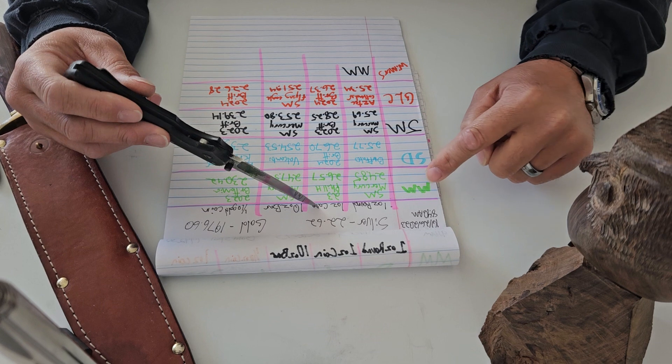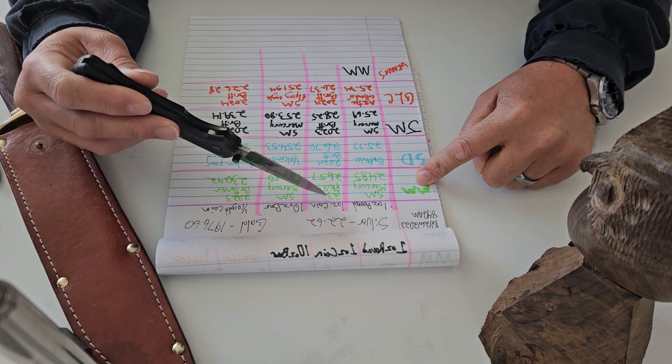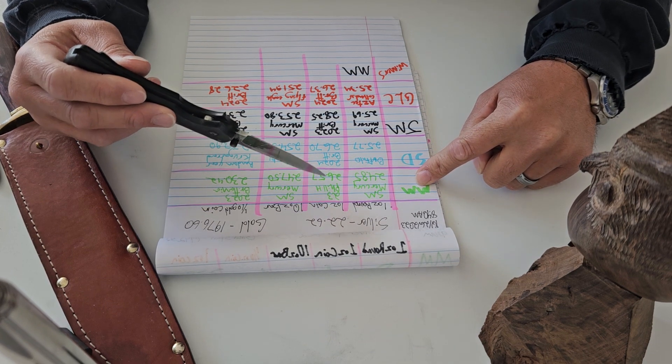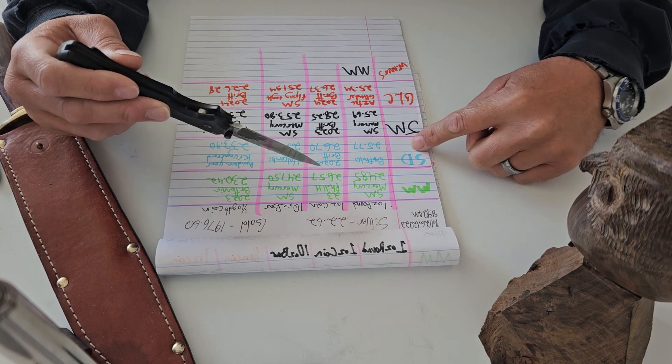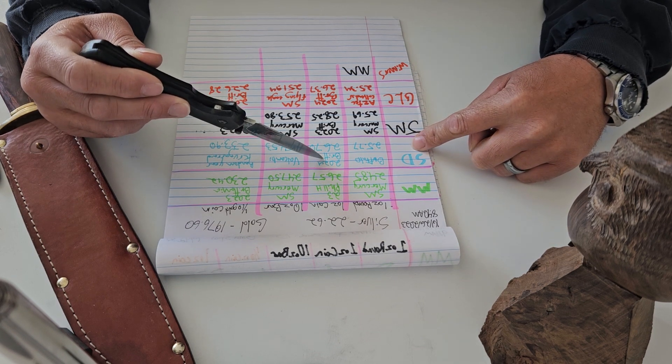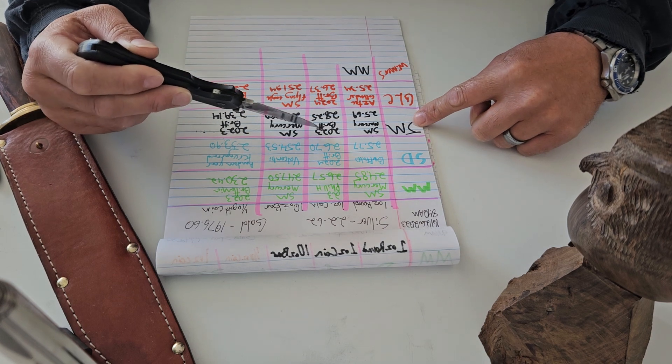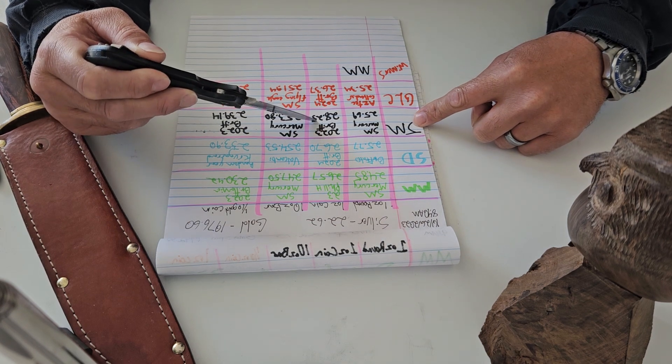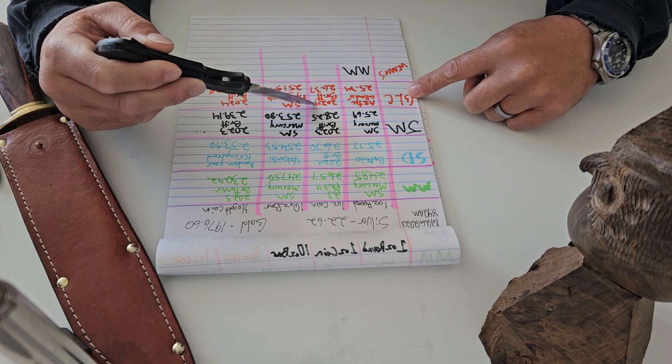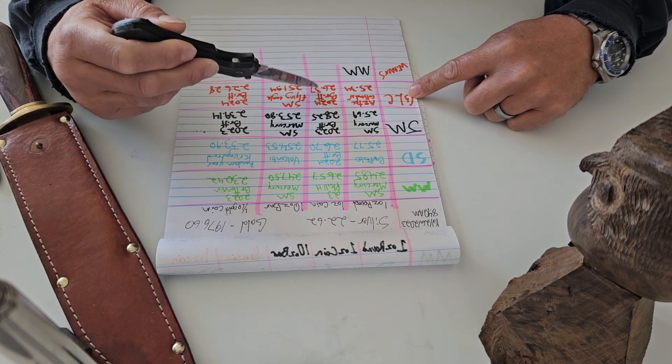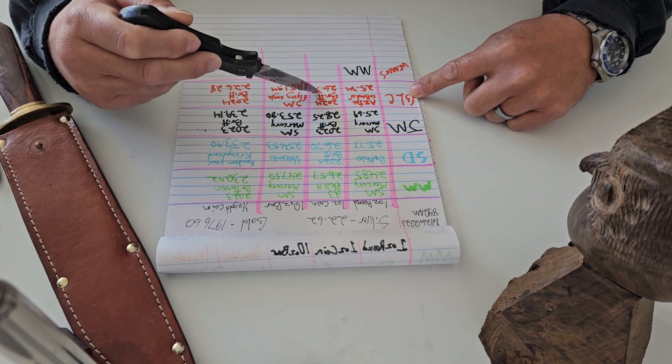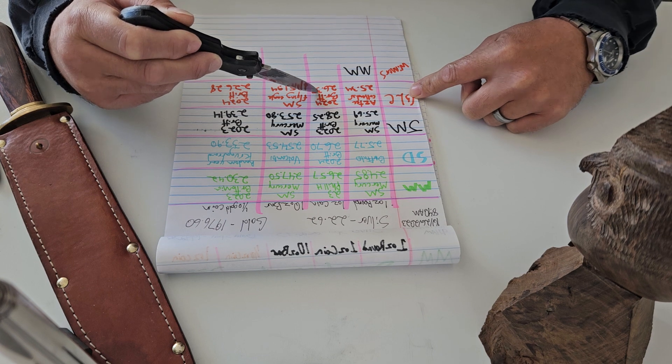1 ounce silver coins. Monument Metals has 2023 Philharmonics for $26.57. SD Bullion has 2024 Britannias for $26.70. JM Bullion has 2023 Britannias for $28.25. Great Lakes Coins has 2024 Britannias for $26.37. That is the check price. So keep that in mind, guys.